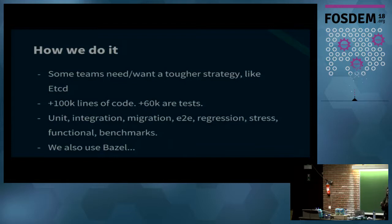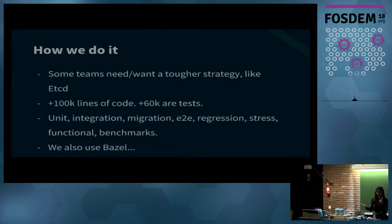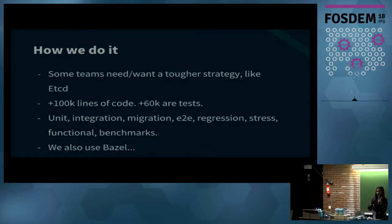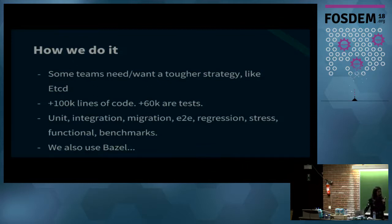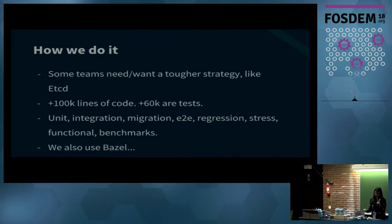Even though I don't work directly with the etcd team, they have a tougher testing strategy for many reasons. etcd is one of the most popular pieces of software right now, and the backgrounds of their engineers means they follow a very strict workflow. In more than 100k lines of code, 60k are just for testing. This includes everything from unit tests to integration, migration, end-to-end, and more.